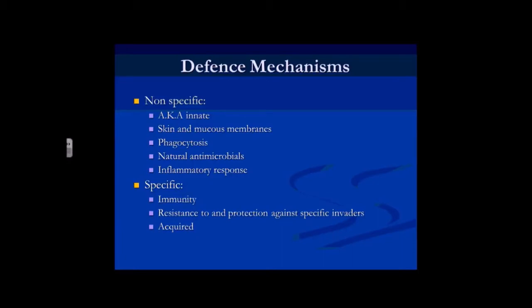The best example of non-specific defence is intact skin or mucous membrane — it's a barrier that stops things getting in. As long as everything is intact and we haven't got any cuts or grazes, that protects us enormously from the external environment. Phagocytosis by macrophages — large white blood cells that will nonspecifically go and gobble up anything they don't think should be there. These cells just go ahead and do that without being initiated by anything in particular.